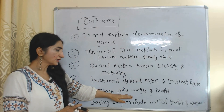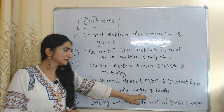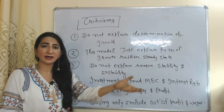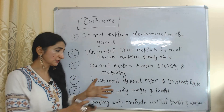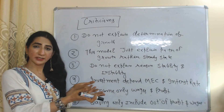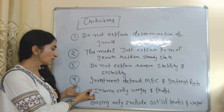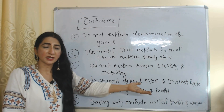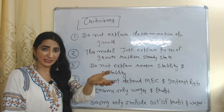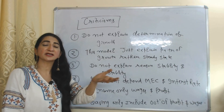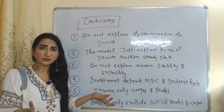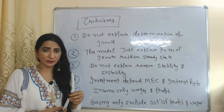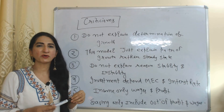According to this model, income only consists of wages and profit — but people also earn income through rent and interest, which this model ignores. Additionally, this model only considers saving out of profit and saving out of wages, but people also save their rent income and interest income, which this model ignores.